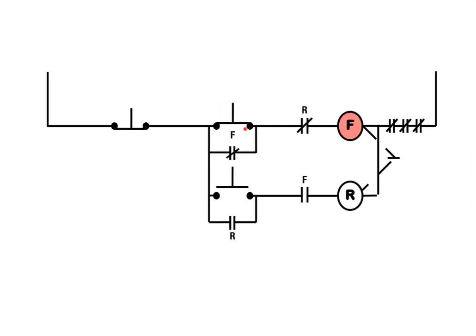So here I push down the forward button. Current can flow through and it can energize F, so F becomes energized. When F becomes energized these normally open contacts become closed and these normally closed contacts become open.